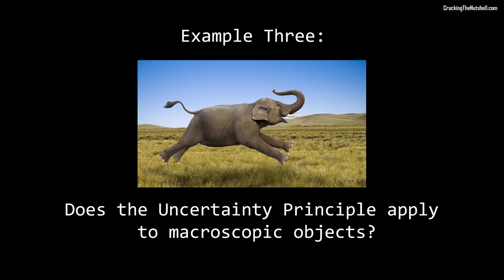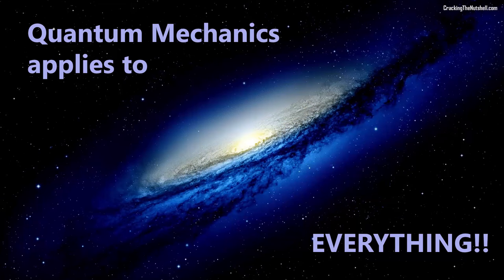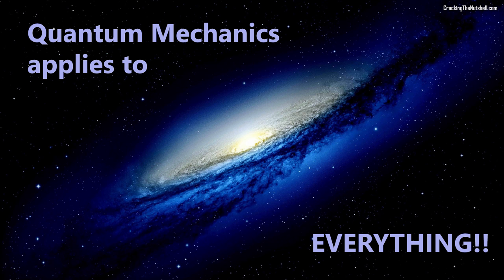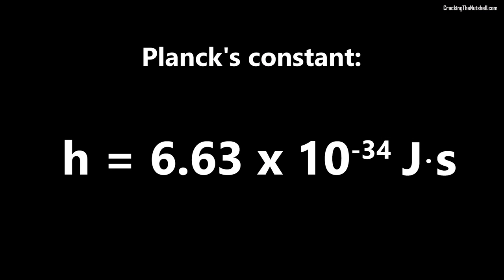You may wonder whether quantum mechanics applies just to the world of tiny things. The answer is definitely not. Quantum mechanics, including the uncertainty principle, applies to everything, no matter what size. The reason why we do not usually observe the uncertainty principle in the macro world of everyday objects is because of Planck's constant, H, which is incredibly small, so minute that the indeterminacy imposed by the uncertainty principle becomes very significant in the realm of atomic and subatomic physics, but it rarely becomes apparent in everyday life.